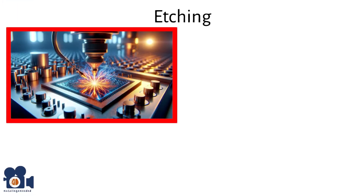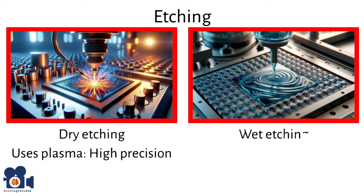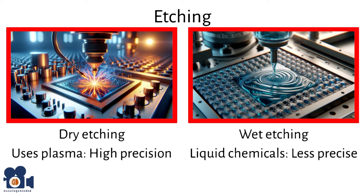Now that there is a pattern on the wafer, etching removes material from the wafer in that desired pattern. Dry etching uses plasma to achieve high precision, while wet etching uses liquid chemicals and is generally less precise but effective for certain applications.